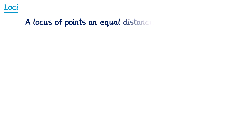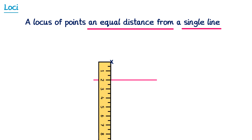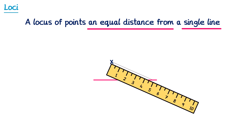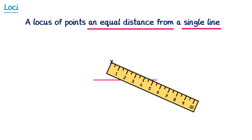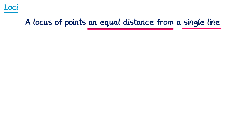For the next locus, we're looking for points that are an equal distance from a single line. When we talk about the distance between a point and a line, we must be careful: the distance is always the shortest distance from the point to the line. For example, a point might be about 2cm from the line perpendicularly. You couldn't say it's 5cm away if it's possible to get there in only 2cm — we always use the shortest distance.